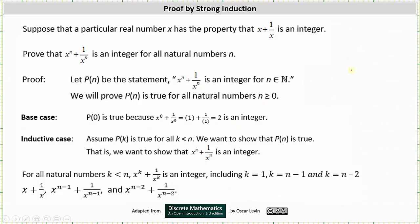We first consider the base case, which is p of zero. p of zero is true because x to the power of zero plus one divided by x to the power of zero is one plus one divided by one, which is equal to two, and two is an integer.